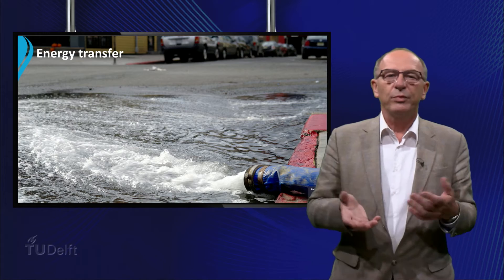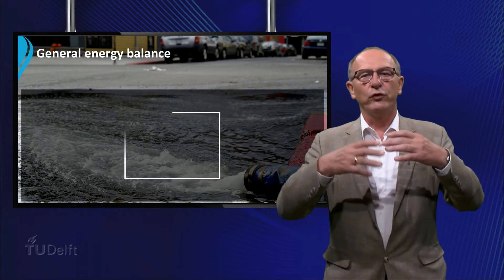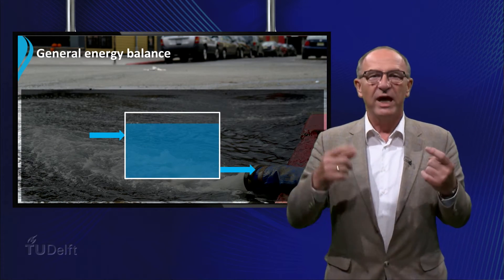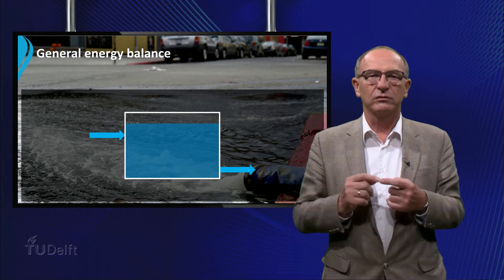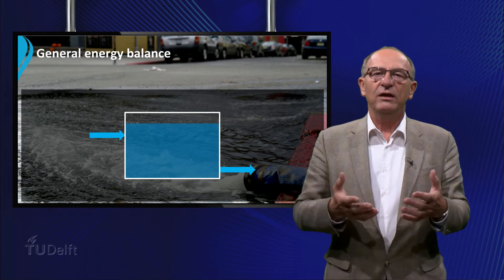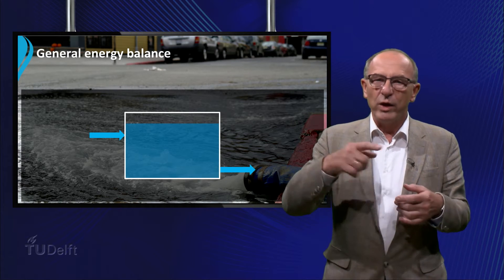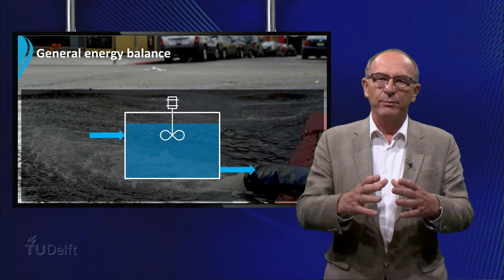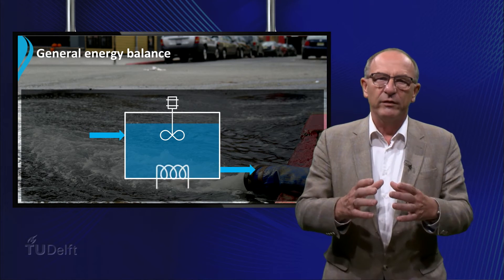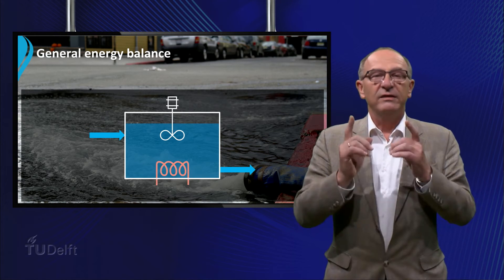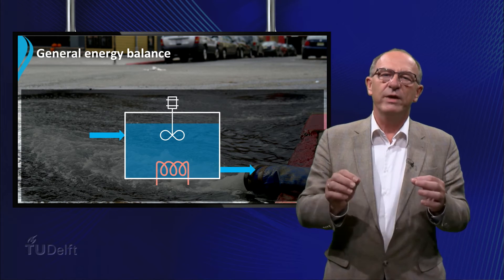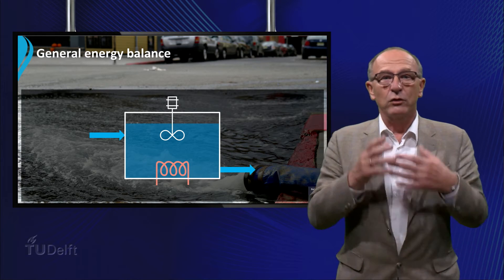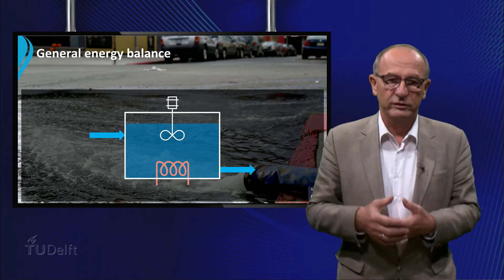We will now set up a general energy balance of a continuous process where a fluid enters and leaves the vessel. The liquid in the vessel is well mixed with a stirrer and is kept at a constant temperature by means of a heating element. This type of vessel is often met in the process industry where raw materials are converted into consumer products.